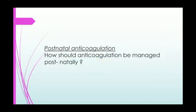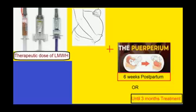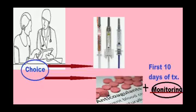Therapeutic anticoagulant therapy should be continued for the duration of the pregnancy and for at least six weeks postnatally, or until three months of treatment has been given in total. Before discontinuing treatment, the continuing risk of thrombosis should be assessed. Women should be offered a choice of low molecular weight heparin or oral anticoagulant for postnatal therapy, after discussion about the need for regular blood tests for monitoring of warfarin, particularly during the first 10 days of treatment.